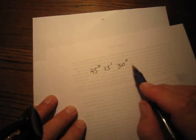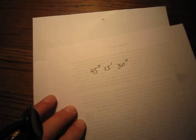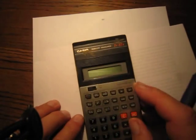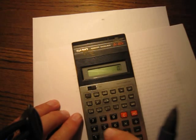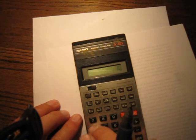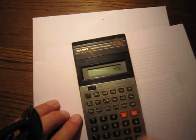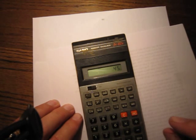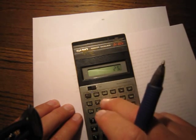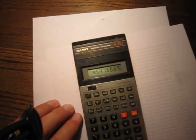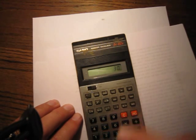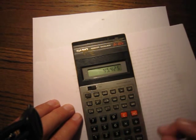Now, when you enter in 45, you've got to push the degree button, then 25, you push the degree button again, and then 30, and you push the degree button again. Then you hit equals.